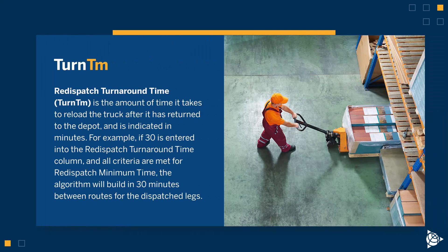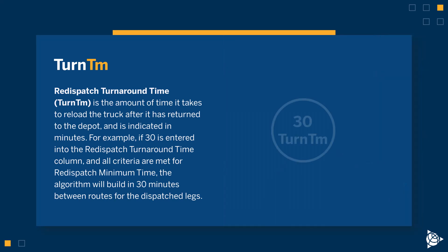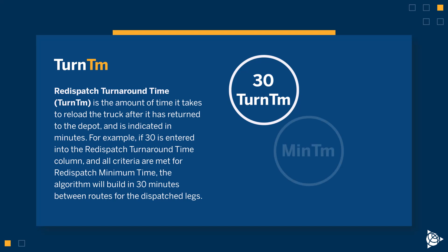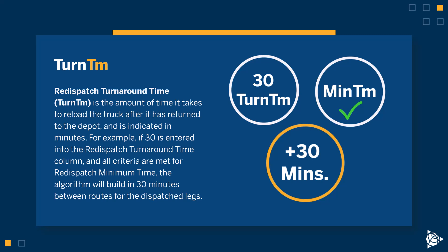Re-dispatch turnaround time is the amount of time it takes to reload the truck after it has returned to the depot, and is indicated in minutes. For example, if 30 is entered into the re-dispatch turnaround time column and all criteria are met for re-dispatch minimum time, the algorithm will build in 30 minutes between routes for the dispatched legs.